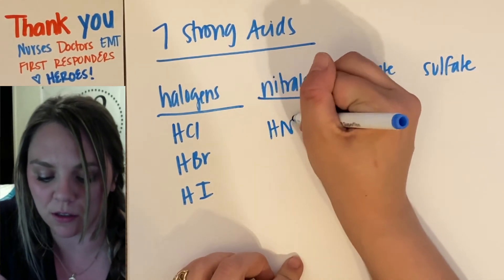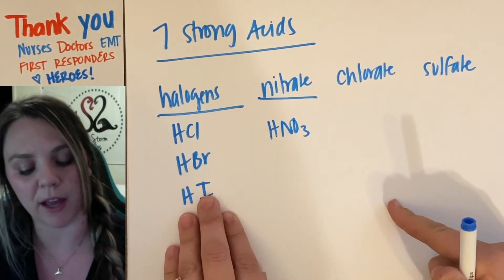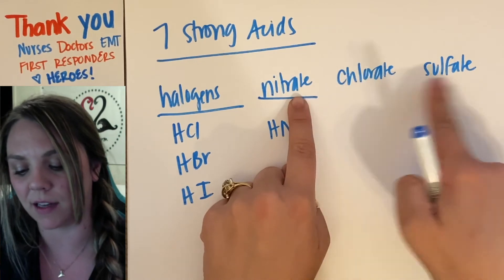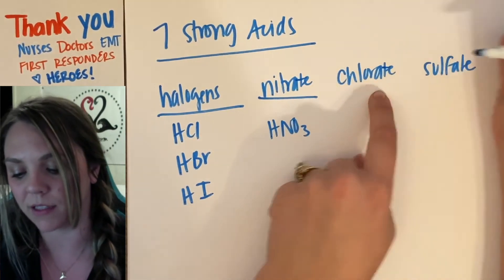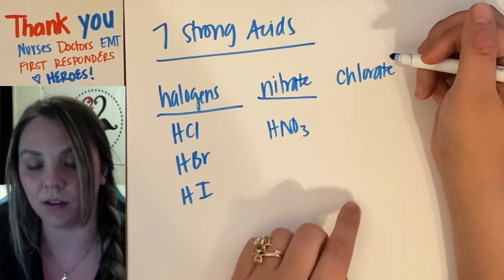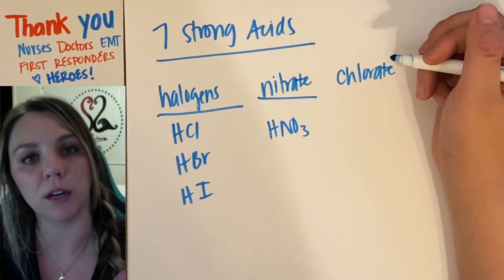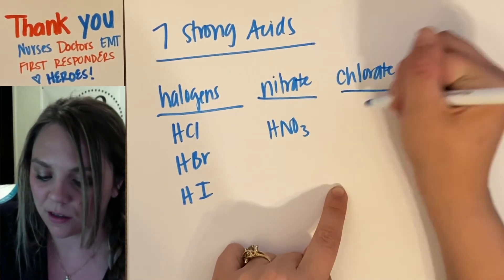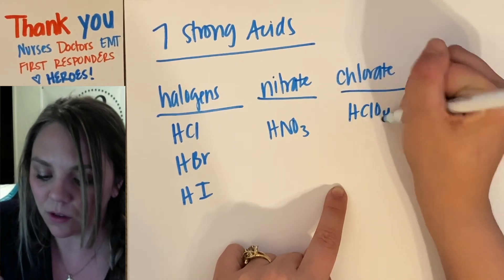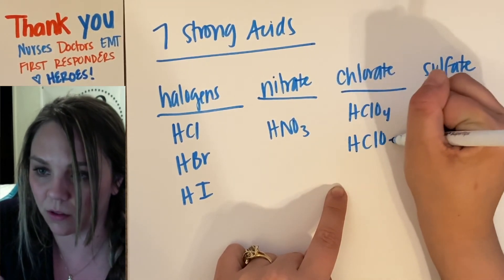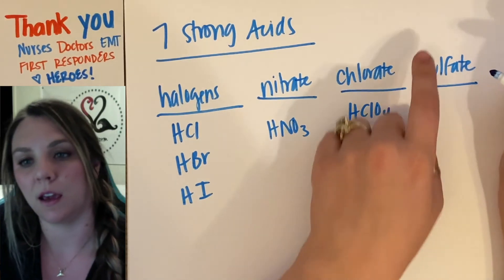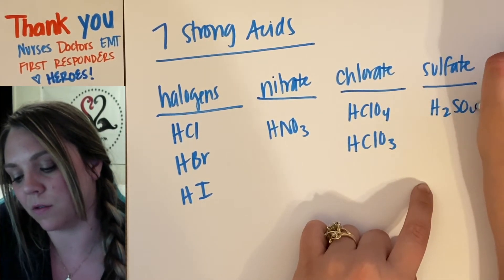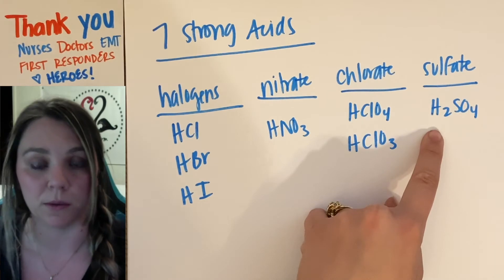Your nitrate is going to be HNO3. So you've got halogens and then you've got your -ates. Nitrate, chlorate, sulfate. And your chlorate, you're actually going to have two different chlorates. You're going to have perchlorate and chlorate. So you're going to have your HClO4, HClO3, and sulfate is going to be your H2SO4. And this one is a weird one, sulfuric acid.